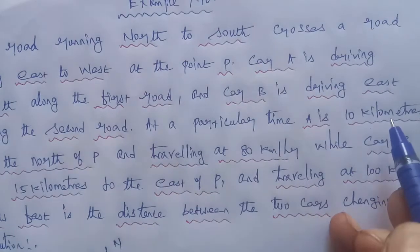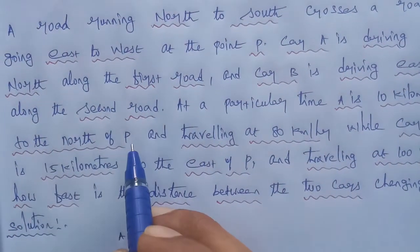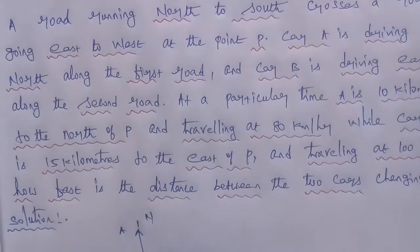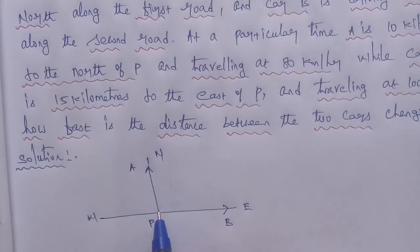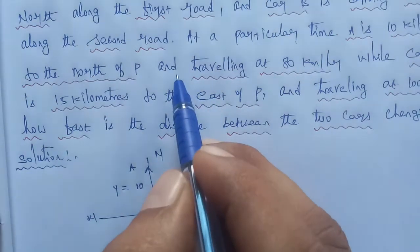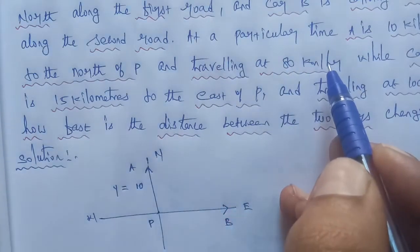A is 10 km to the north of P. So from point P, car A distance is 10 km. This is the y-axis, y is equal to 10 km.